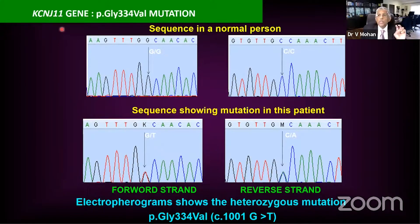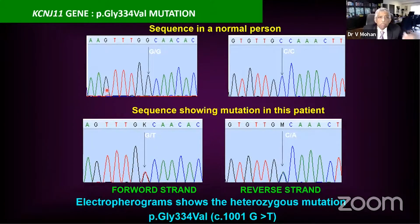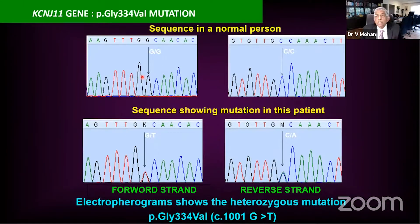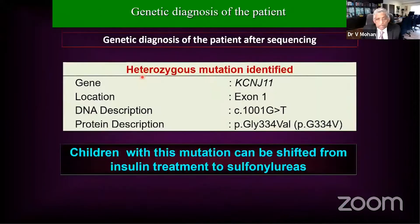This mutation was in the KCNJ11 gene. There are two genes which can produce neonatal diabetes: KCNJ11 and ABCC8 — ABCC8 is nothing but the sulfonylurea receptor mutation. This was a glycine-to-valine mutation at the 334th position, and with this we confirmed that this child had neonatal diabetes due to a KCNJ11 mutation. Luckily this type responds to sulfonylurea tablets.